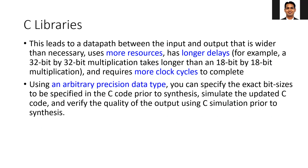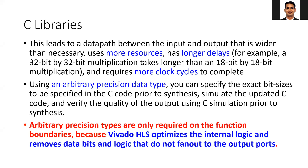Using the arbitrary precision data type, you can specify the exact bit sizes required in the C code prior to synthesis, simulate the code, verify the output accuracy, and then convert into Verilog code. Arbitrary precision is needed only for the input and output ports because the rest of the internal variables are automatically optimized by the HLS tool. You need to worry about choosing arbitrary precision for input and output word length variables only.